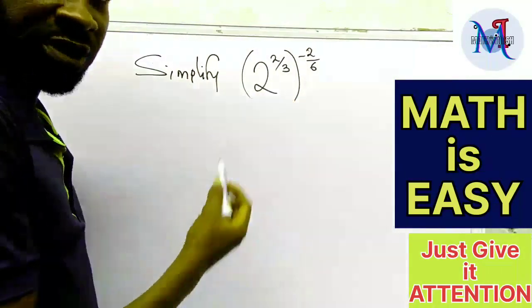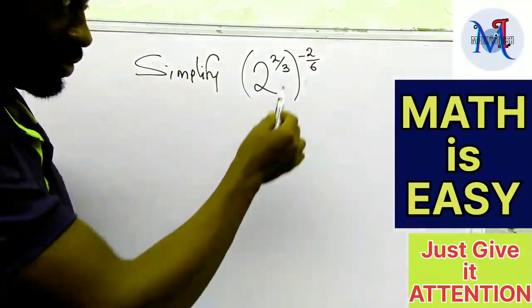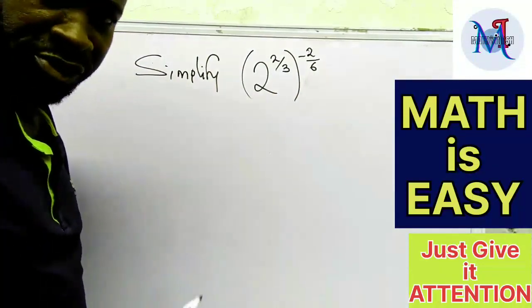So we have 2 is about 2 over 3 times, or in brackets, minus 2 over 6.